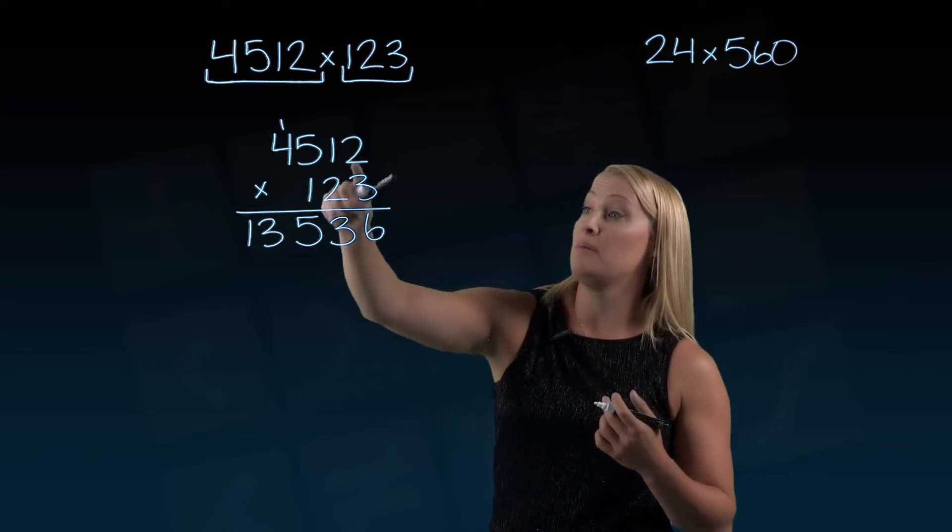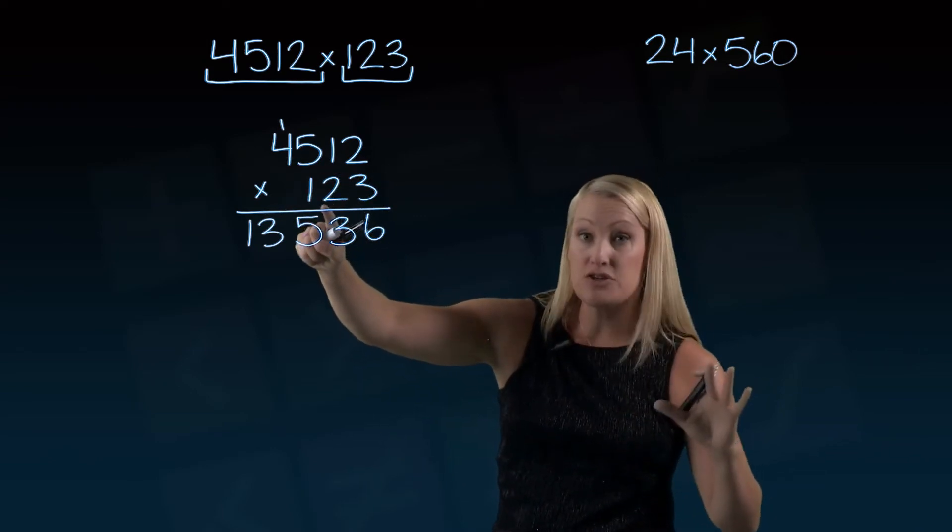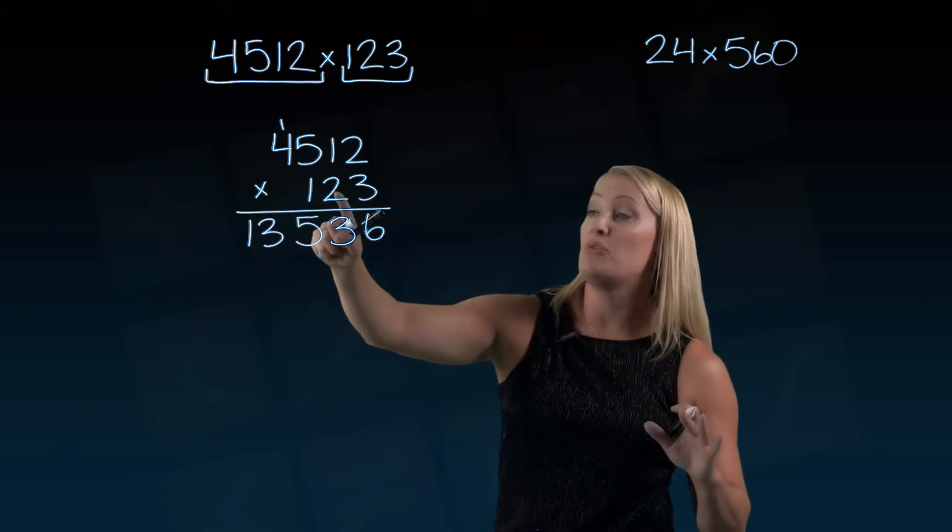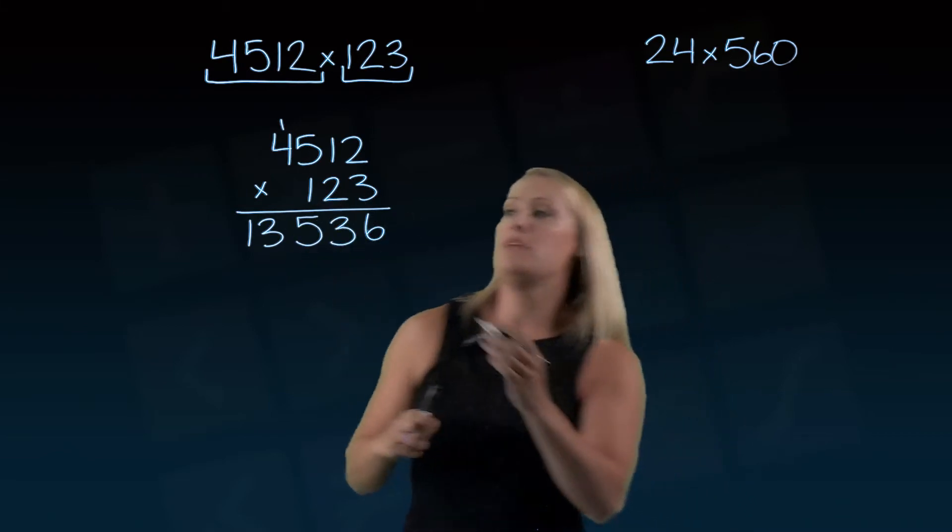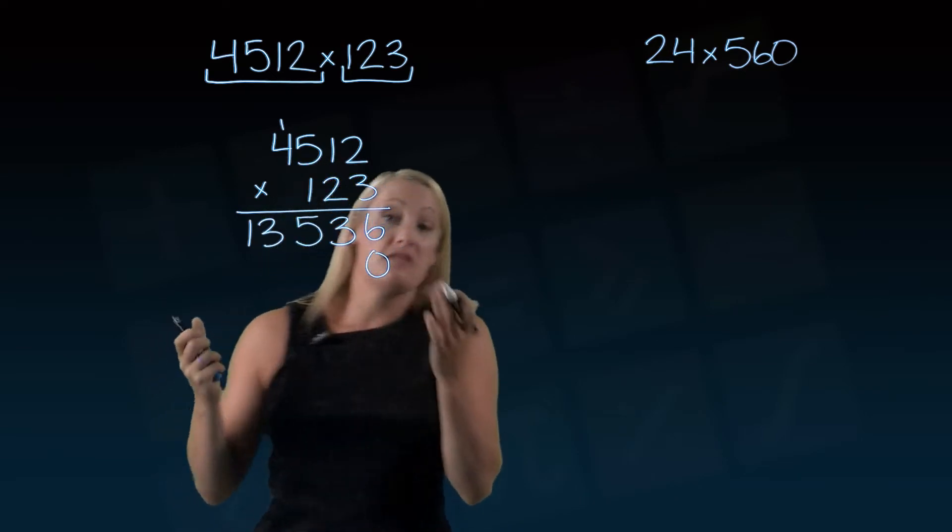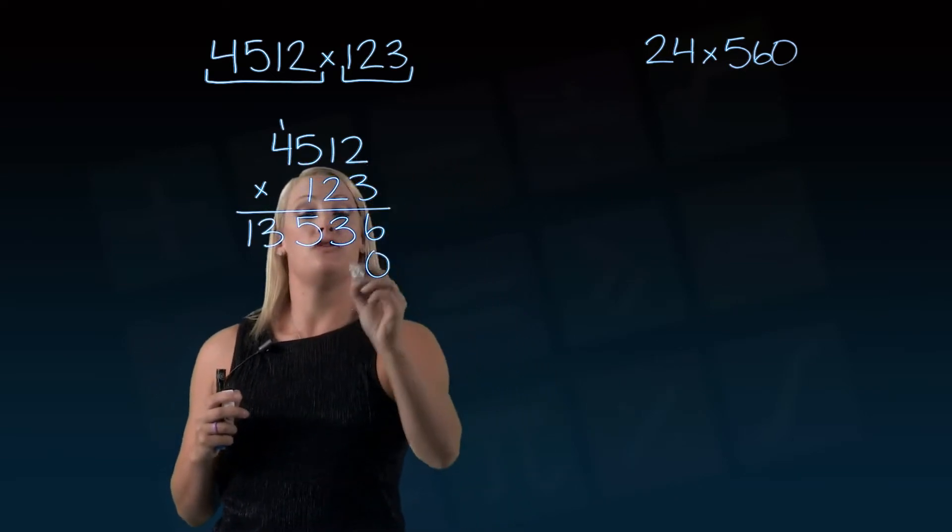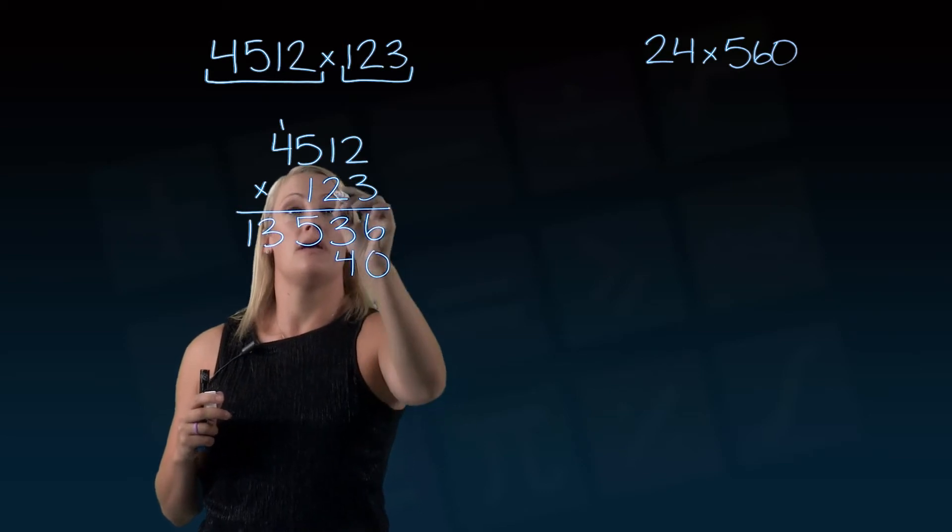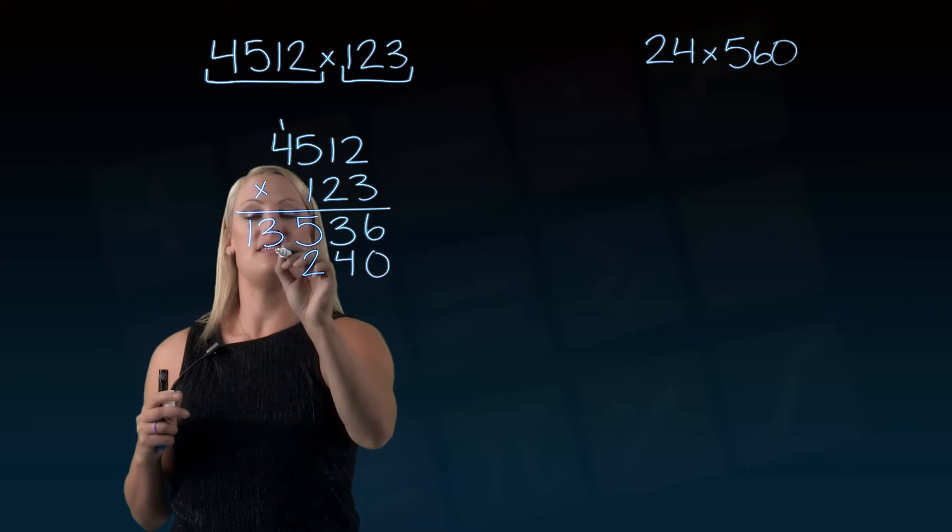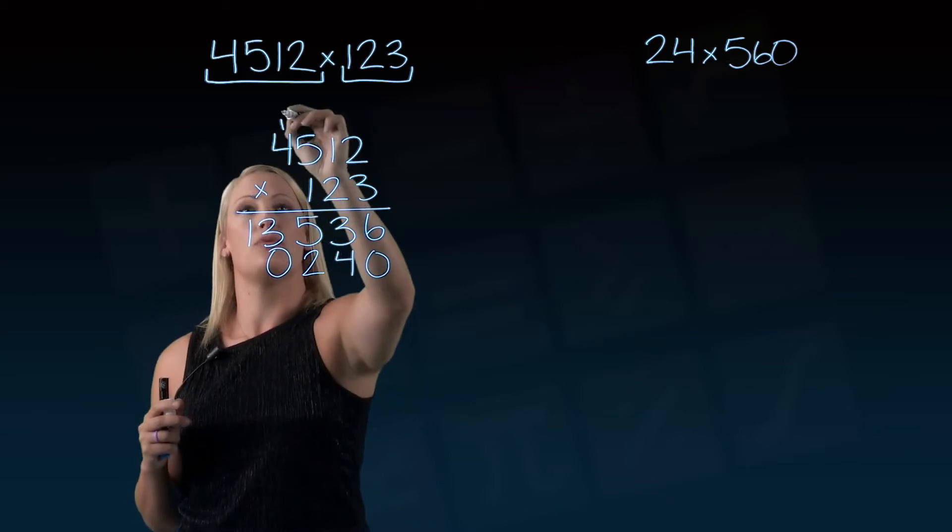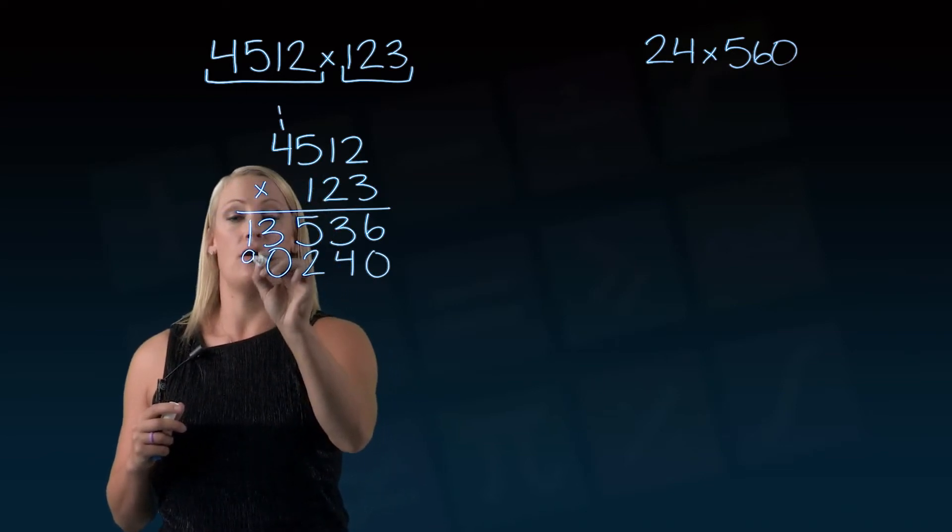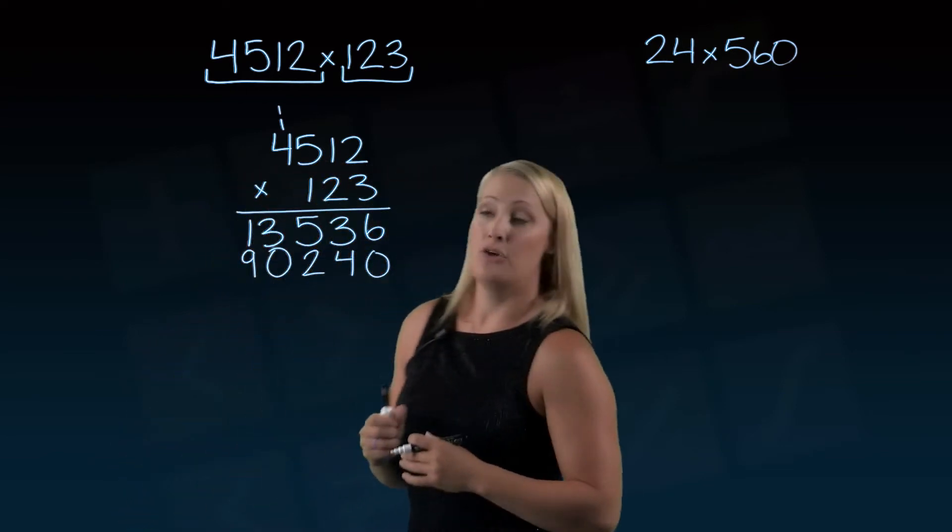Now we're going to multiply that same number by 20, not by 2, but by 20. In order to multiply it by 20, we need to put a 0 placeholder there first. Now we do the same thing: 2 times 2 is 4, 2 times 1 is 2, 2 times 5 is 10. I'll put the 0 down and put another 1 up there. 2 times 4 is 8, plus that 1 gives me 9.